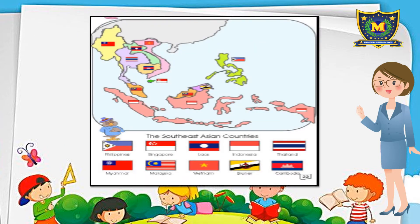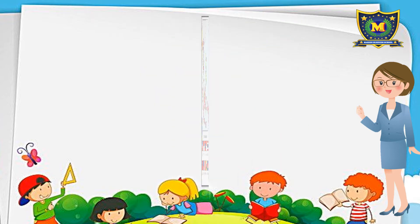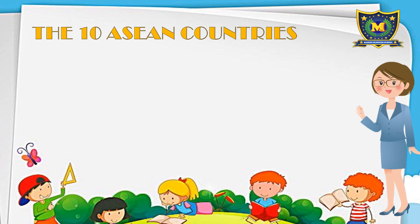This is the picture of Southeast Asia, a small part of the whole continent of Asia, but home of 10 beautiful countries. The Association of Southeast Asian Nations is a regional grouping that promotes economic, political, and security cooperation among its 10 members.